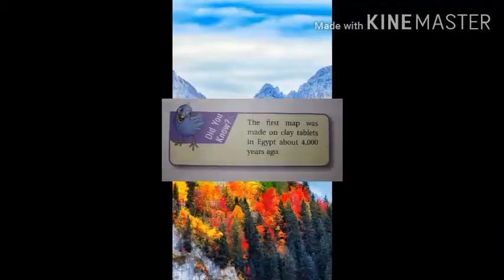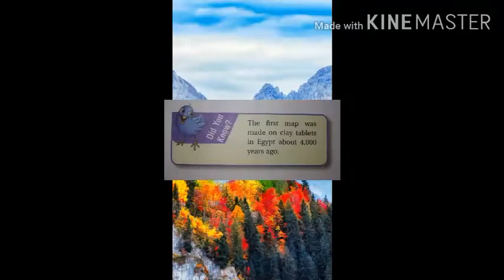You know the first map was made on clay tablets in Egypt about 4,000 years ago. Now atlas. A collection of maps in a form of a book is called an atlas.